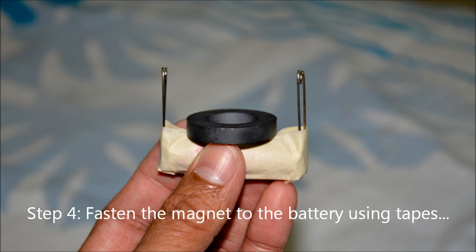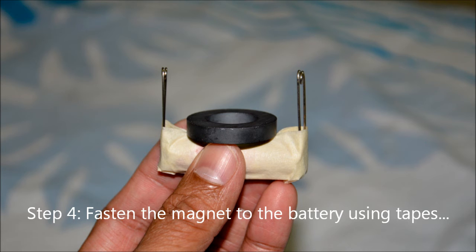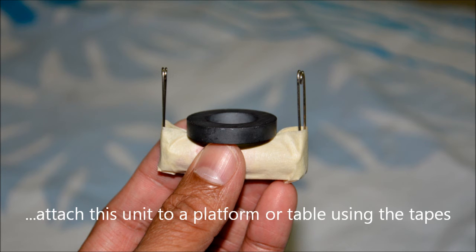Step 4. Place the magnet on the battery as shown here and fasten the magnet and the battery together to a platform.